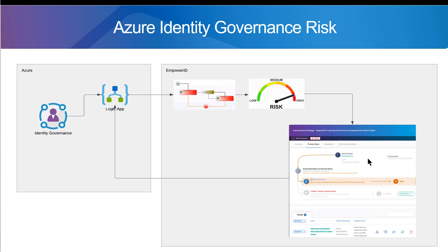If a violation is detected, it generates a workflow approval task. The task can go for multiple levels of approval if desired — any number of levels. In this case, it's a simple policy where it goes to the owner of the thing being requested, in this example a group. Then if a risk violation gets triggered or detected, the risk owner gets a task activated for them to choose whether to reject the risk or to mitigate and accept the risk and approve it, assigning mitigating controls.